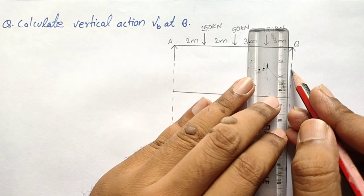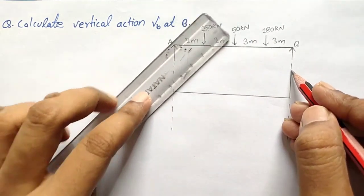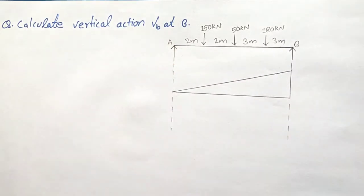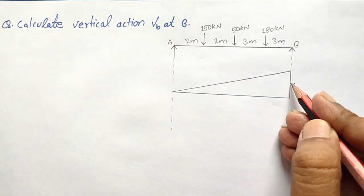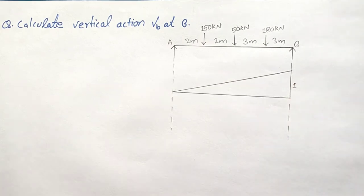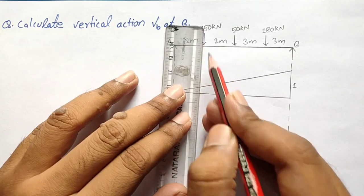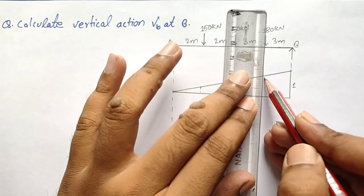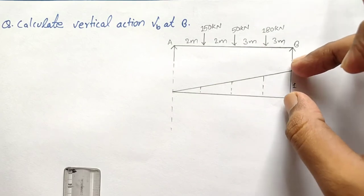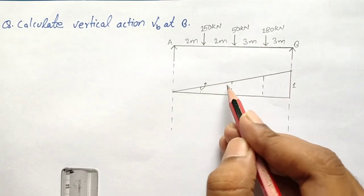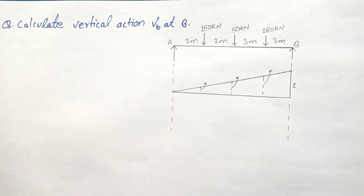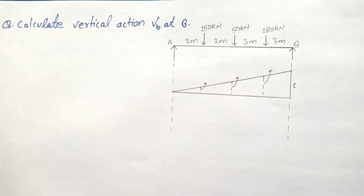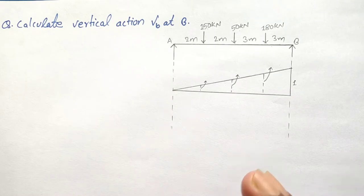We are calculating the reaction at B, so we draw a triangle with maximum ordinate of 1 at support B. We need to find the ordinates under each of the applied loads, because these loads influence the reaction at support B. To calculate these ordinates we use the concept of similar triangles.